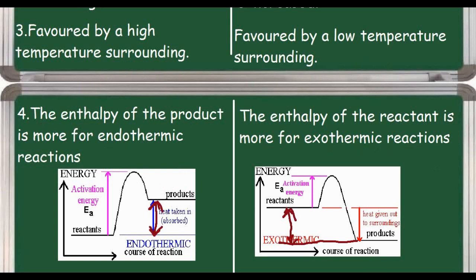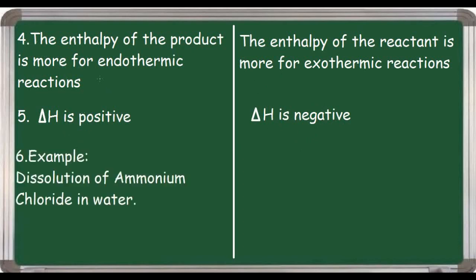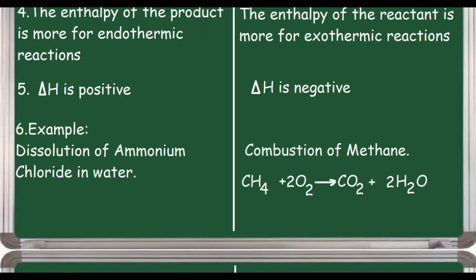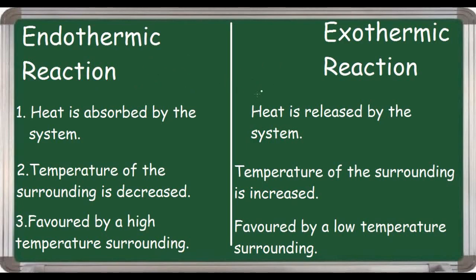The fifth point: for endothermic reactions, ΔH is positive, meaning the enthalpy change of the reaction is positive. For exothermic reactions, ΔH is negative. The sixth point covers examples: dissolution of ammonium chloride in water is an example of an endothermic reaction. Combustion of methane is an example of an exothermic reaction — methane reacts with two moles of oxygen to give carbon dioxide and two moles of water, with heat released. These were the differences between endothermic and exothermic reactions.